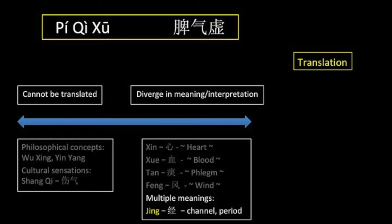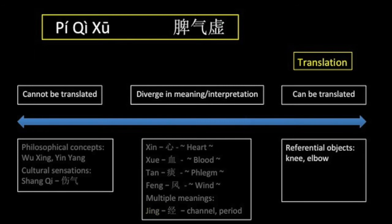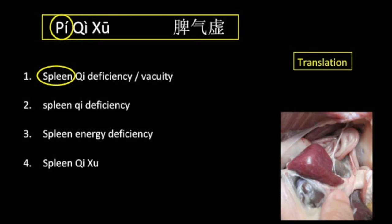Translation can also be complicated by the fact that Chinese words can have multiple meanings depending on context. A good example is jing — the same Chinese character can mean either a channel or a woman's period. However, some items are basically referential. There is no question as to which organ the English word spleen, or the Chinese word pi, refers to.